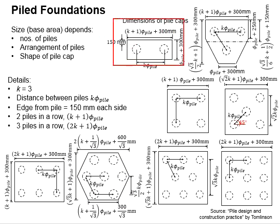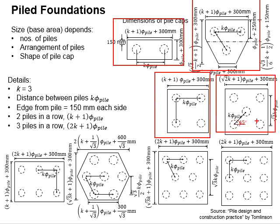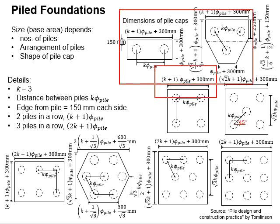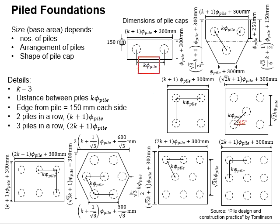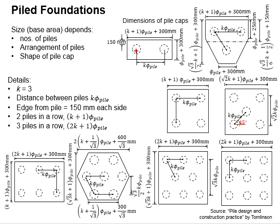The dimensions of the different types of pile caps are given here. There are some common characteristics. D here refers to the diameter of the piles and the value k represents the constant number of 3. The spacing between the piles is normally set as k times D, and this is applicable for any number of piles, measured from the centroid of one pile to another pile.